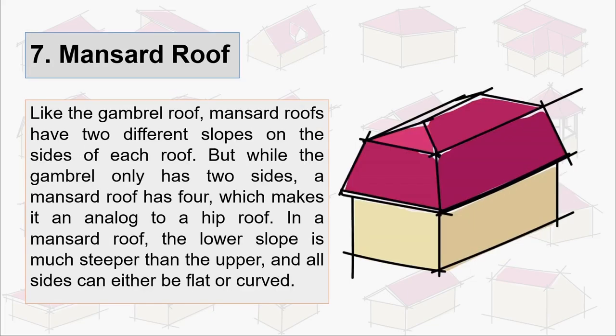Seventh is mansard roof. Like the gambrel roof, mansard roofs have two different slopes on the sides of each roof, but while the gambrel has only two sides, a mansard has four which makes it an analog to a hip roof. In a mansard roof, the lower slope is much steeper than the upper and all sides can either be flat or curved.